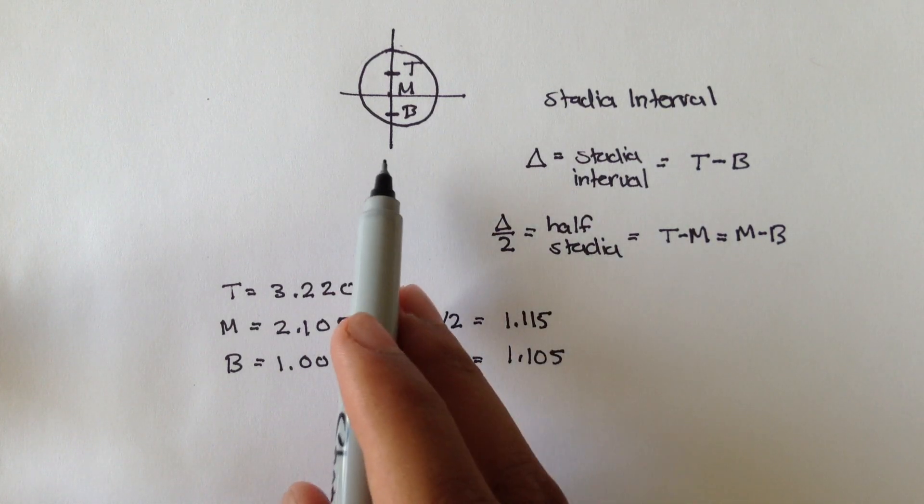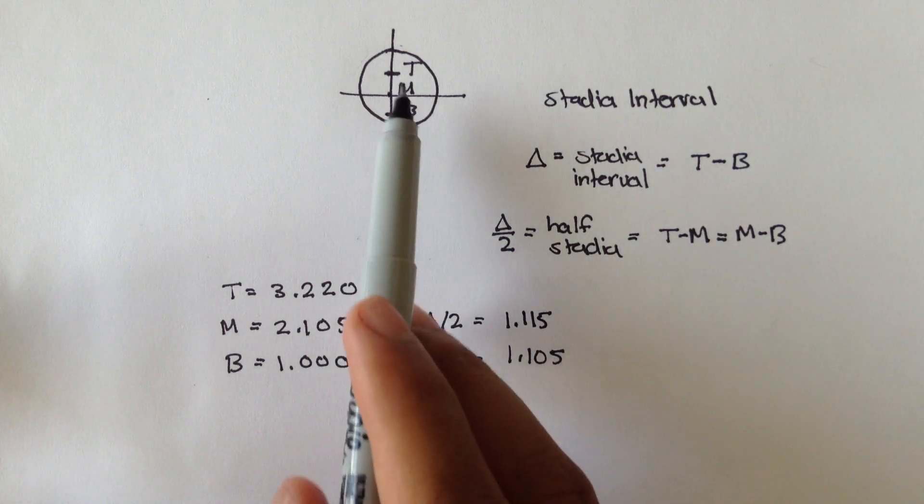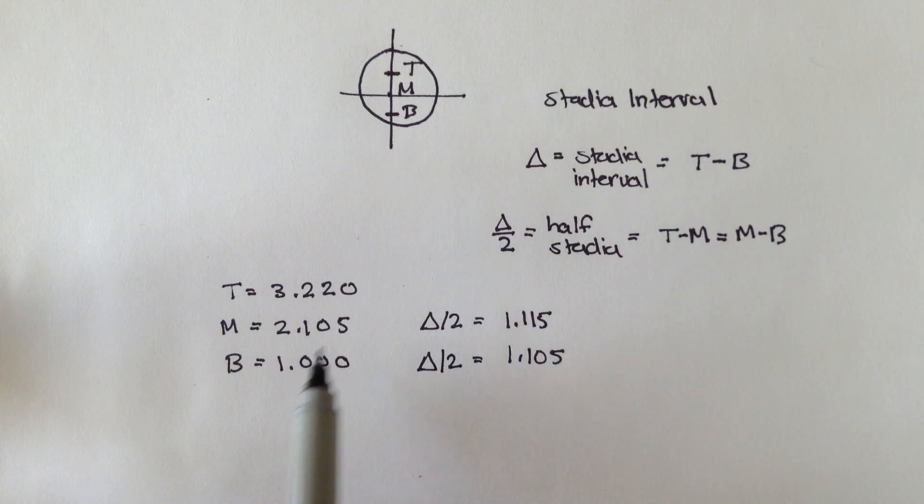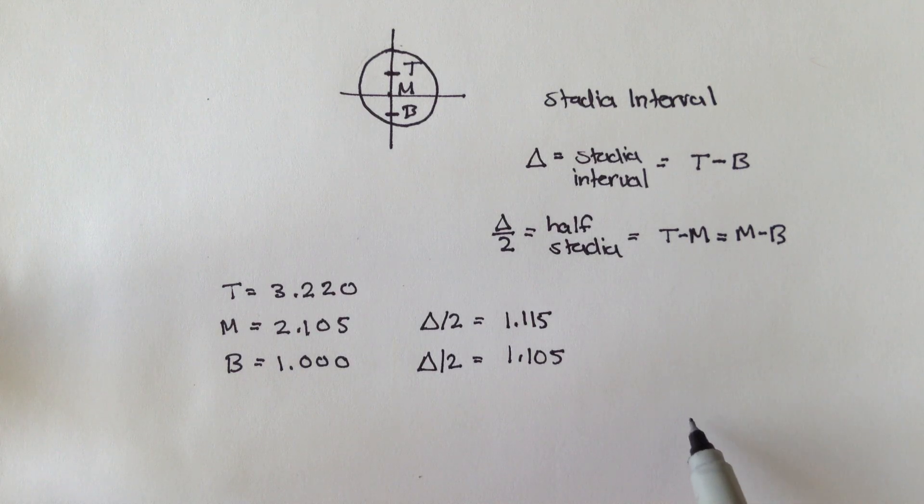So, when you're measuring three-wire leveling, and you're looking through the telescope, and you find your three measurements, you always want to check if your half stadias are good enough. Meaning, the top minus middle should be about the same as the middle minus bottom.